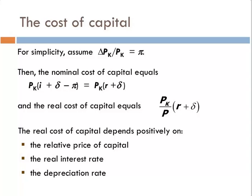If you don't remember how to derive all this, you can re-watch the video, or just remember the key result: the real cost of capital depends positively on the relative price of capital (pK over P), the real interest rate, and the depreciation rate. If the relative price of capital goes up, cost goes up. If the real interest rate goes up, cost goes up. If the depreciation rate goes up, cost goes up.